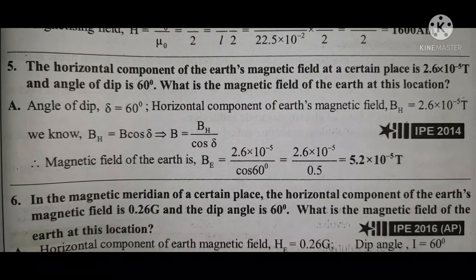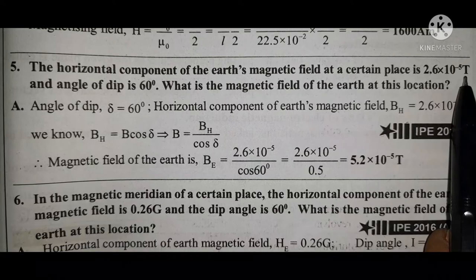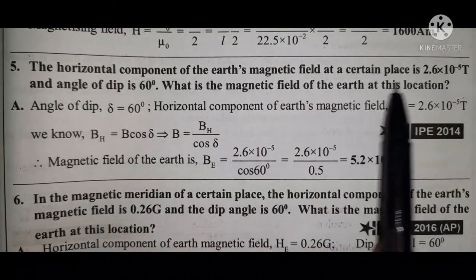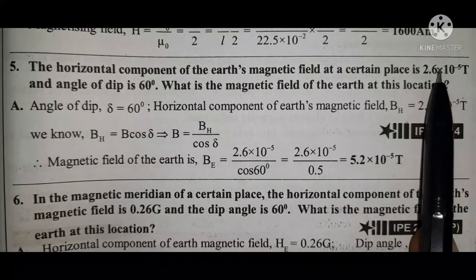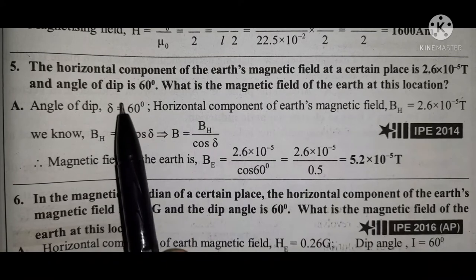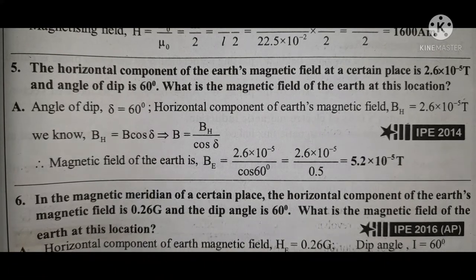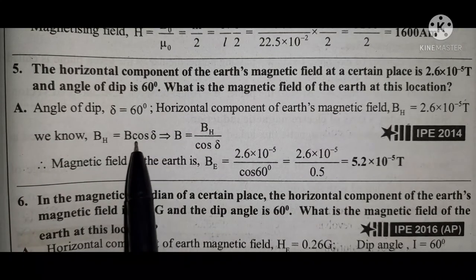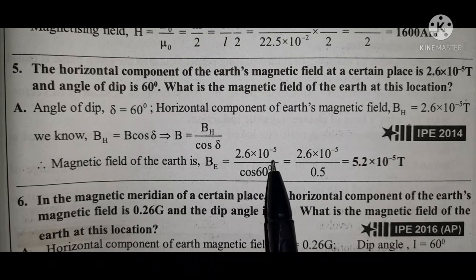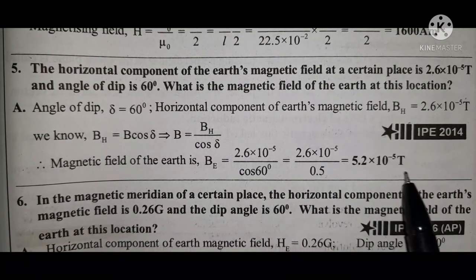Problem one: The horizontal component of Earth's magnetic field at a certain place is 2.6 × 10⁻⁵ tesla and the angle of dip is 60 degrees. Find the magnetic field of Earth at this location. Given: B_H = 2.6 × 10⁻⁵ T, angle of dip δ = 60°. Formula: B_H = B cos δ, so B = B_H / cos δ = (2.6 × 10⁻⁵) / cos 60° = (2.6 × 10⁻⁵) / 0.5 = 5.2 × 10⁻⁵ tesla.